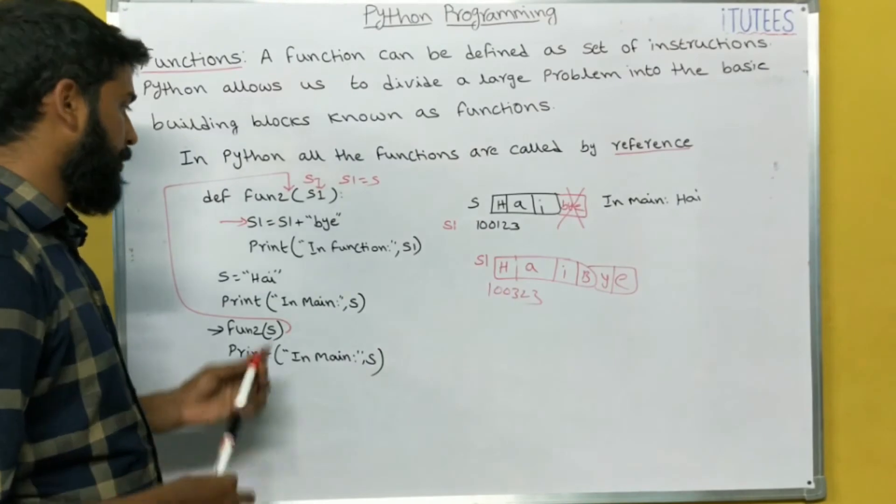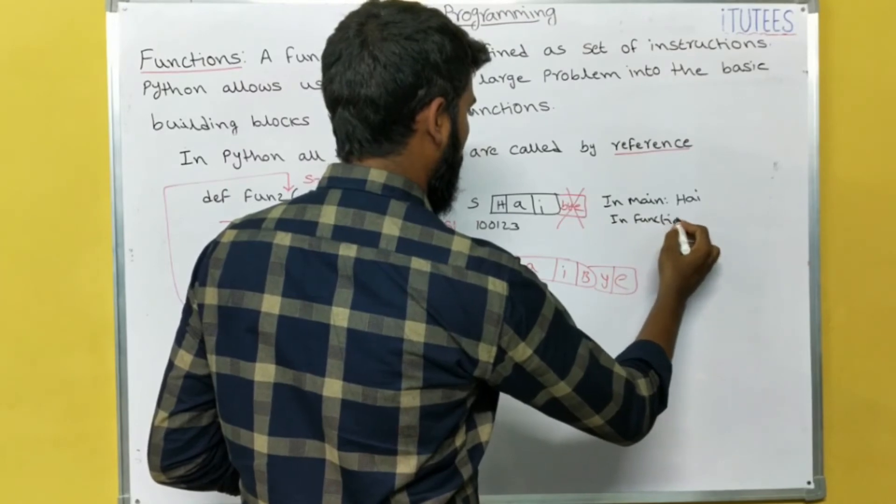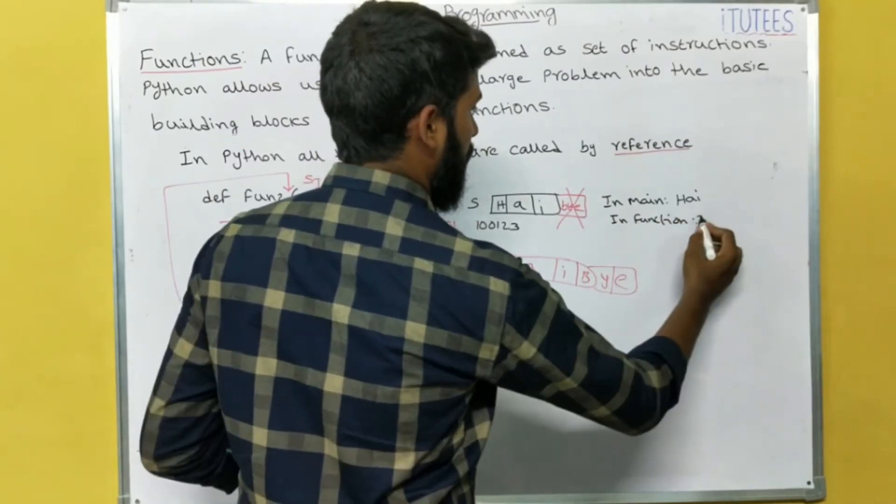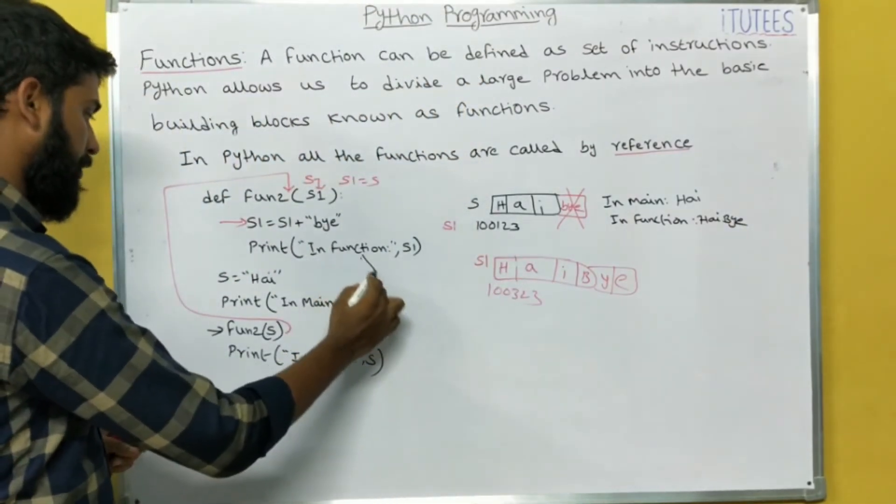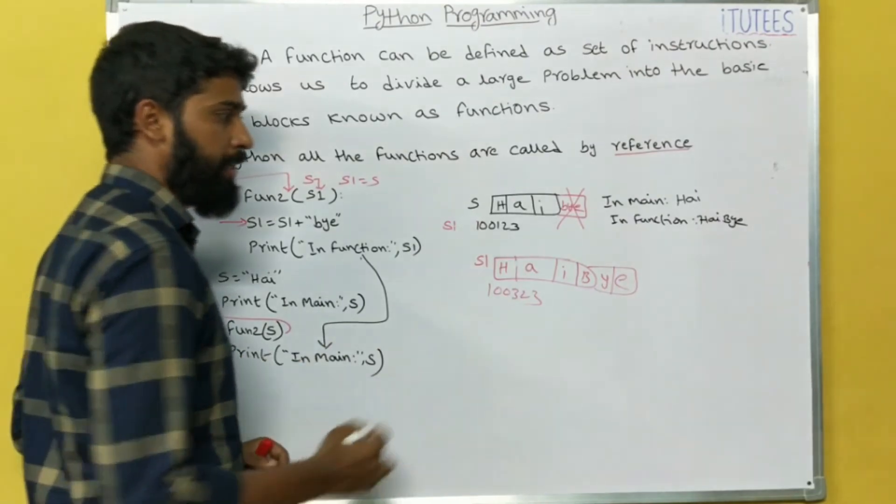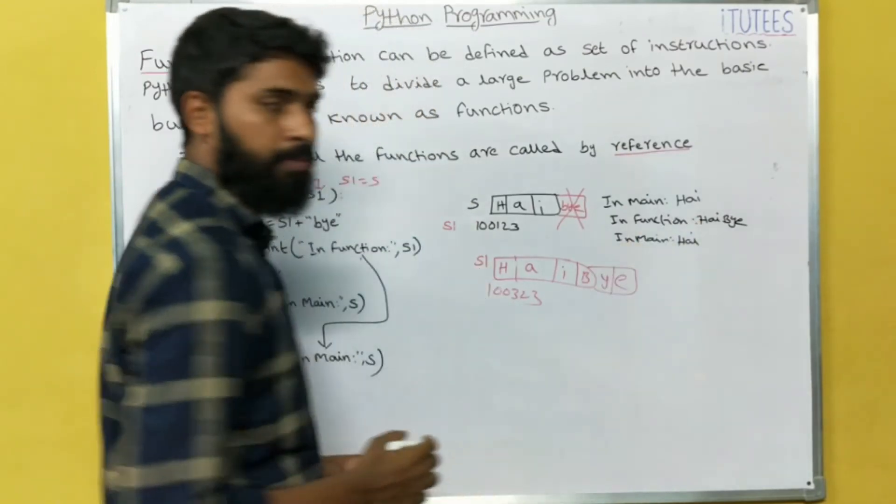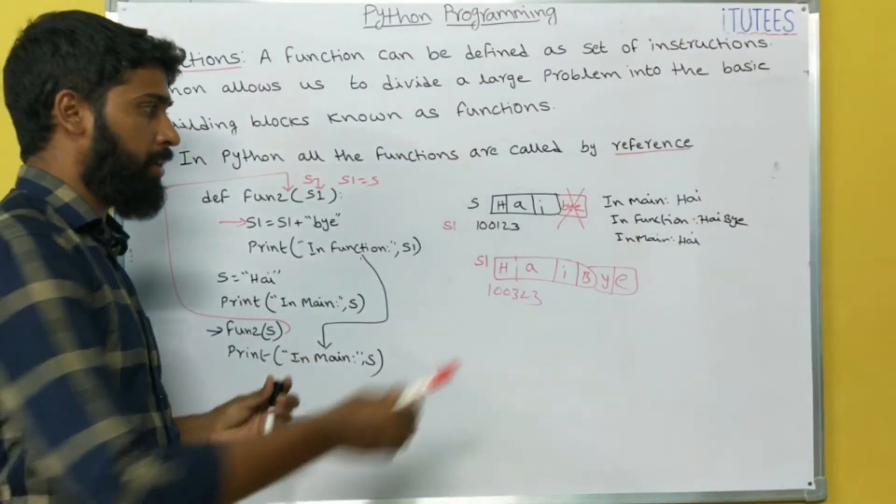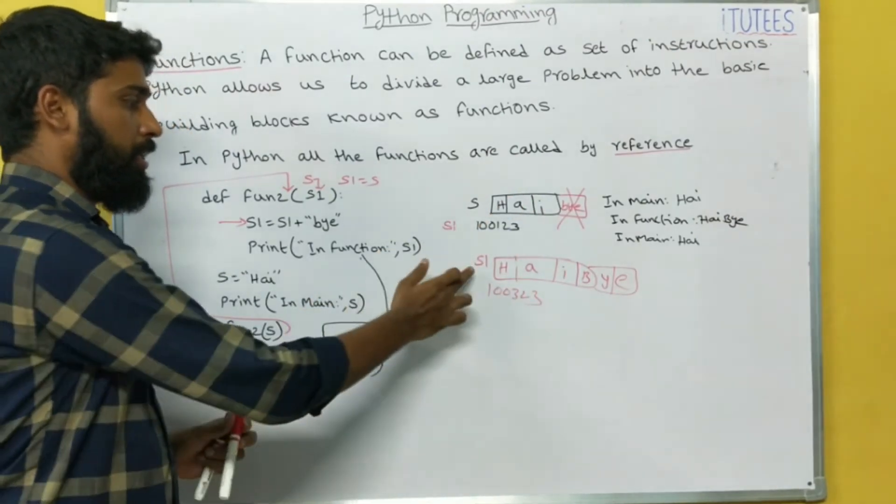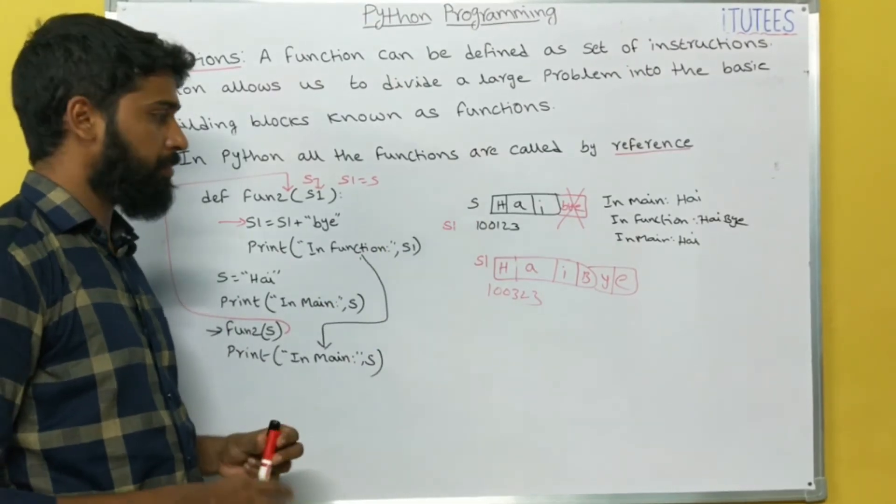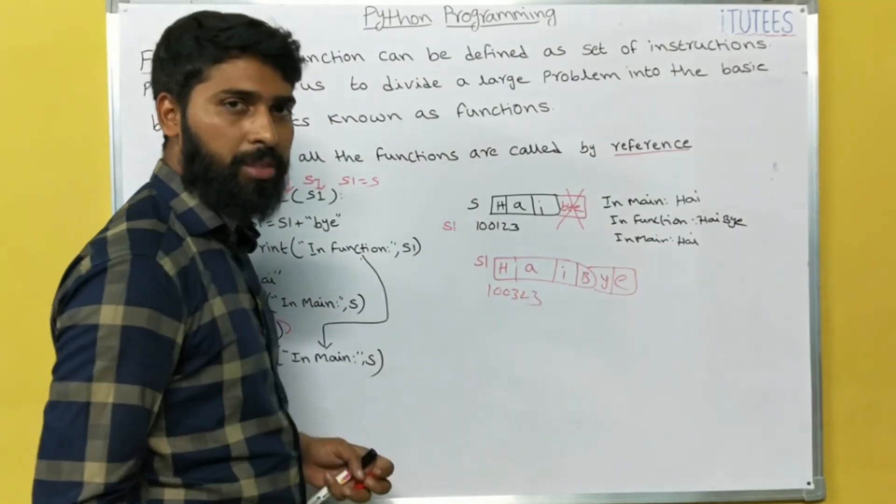After completion of this we return to here. Print in main S. In main, what is the high only. If you are using the list, the modifications are done. Why? Because it's called by reference. But here S string is immutable. So we cannot append by to the high, it creates another object S1.